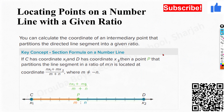Now we move on to the next topic — partitioning using ratios. When a ratio m to n is given instead of a fractional distance, the formula changes. The formula for finding the point that partitions a directed line segment in the ratio m to n is: (n times x1 plus m times x2) divided by (m plus n). Let's apply this formula to a problem.